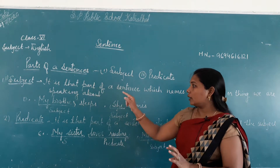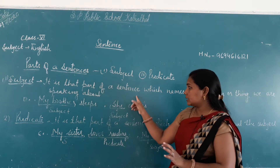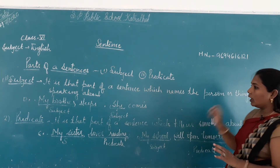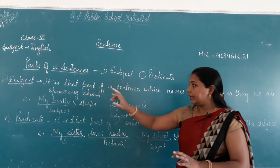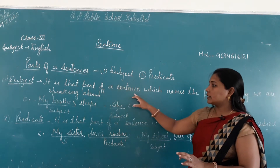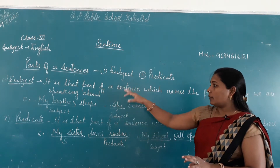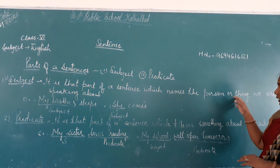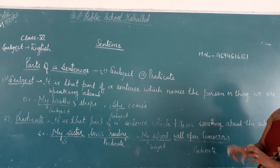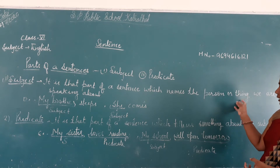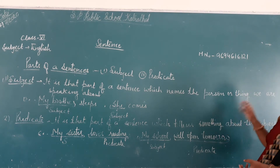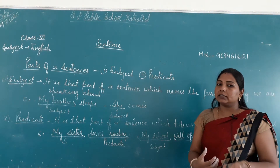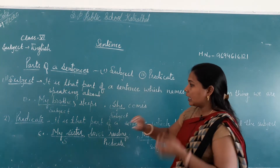Subject क्या होता है? It is that part of a sentence which names the person or thing we are speaking about. यानि वो part sentence का वो भाग है which names — जिसका नाम है, the person or thing — यानि sentence के अंदर किसी भी person या thing का जो नाम है, we are speaking about — और हम उसके बारे में बात कर रहे हैं — वो subject है।